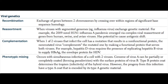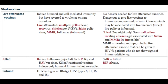Complementation occurs when one of two viruses infecting a cell has a mutation resulting in a non-functional protein. The non-mutated virus complements the mutated one by making a functional protein that serves both viruses. Phenotypic mixing occurs with simultaneous infection of a cell with two viruses. The genome of virus A can be partially or completely coated, forming a virion with the surface proteins of virus B. The type B protein coat determines infectivity, but progeny will have a type A coat because it is encoded by type A genetic material.